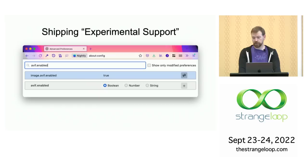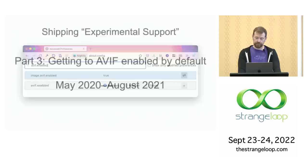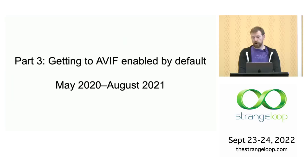I wanted to make this available to users because the more people you can get using your code and providing feedback early, the better it'll be by the time it's widely released. In May 2020, we shipped experimental AVIF support. The code was in the browser, but users had to opt in since there were still missing features that would cause images to render incorrectly. Now we started to get bug reports, both from users and through automated fuzz testing — a process where the implementation is continuously fed randomized input to search for vulnerabilities. The choice of Rust for parsing the container was paying off, as this testing uncovered many opportunities for optimization but no security issues.